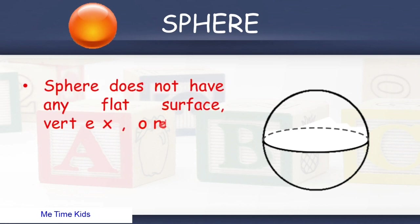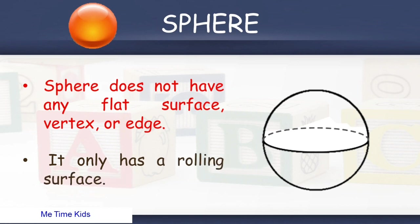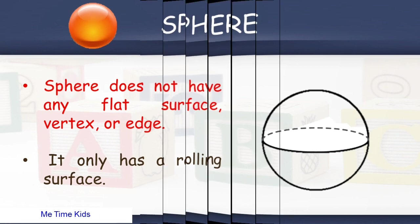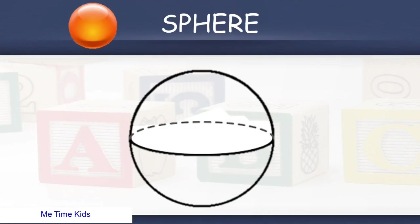It only has a rolling surface. Look at the figure — it has no face, no edge, and no vertex. Look at the figure for radius of sphere.